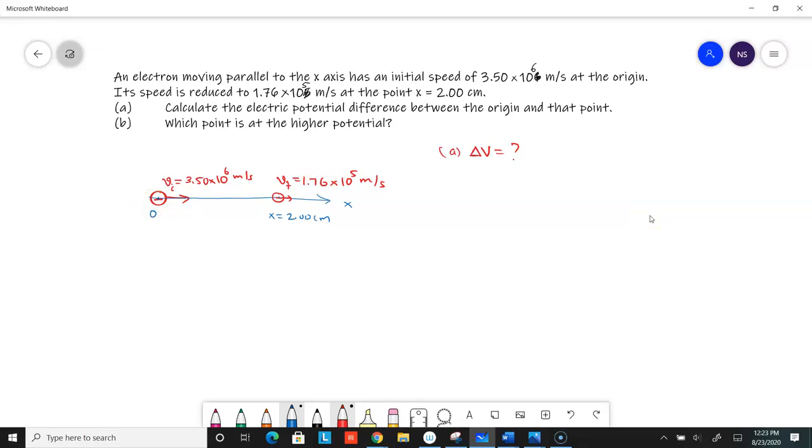Okay, so when you see this, probably the first thing that comes to mind is it has kinetic energy but slowed down. So it has lost kinetic energy, which means it must have gained potential energy in the process. So conservation of energy, if conservation of energy was the first thing that came to your mind, you're on the right track.